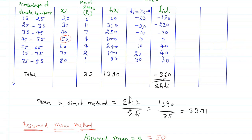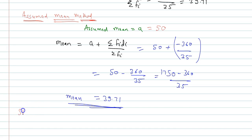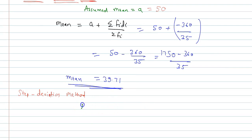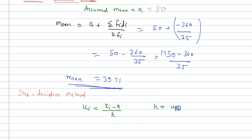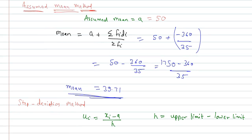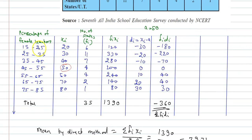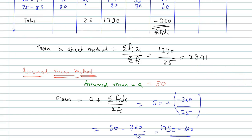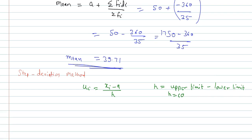The third method is the step deviation method. In this method, we consider another term Ui for each Xi, where Ui = (Xi − a) / h, and h is the class width (upper limit minus lower limit). In this question the interval width is 10, so h = 10.